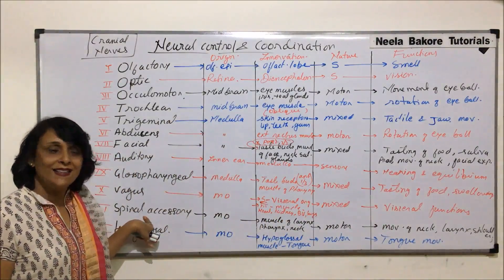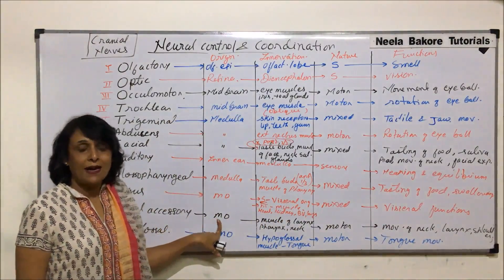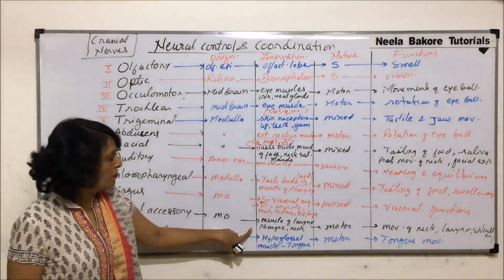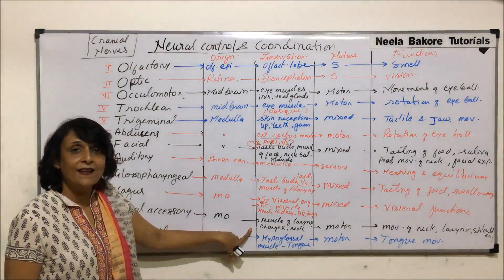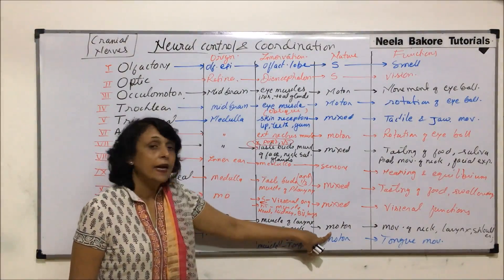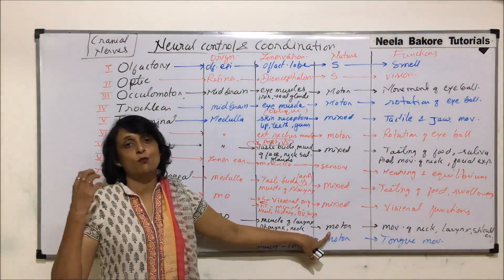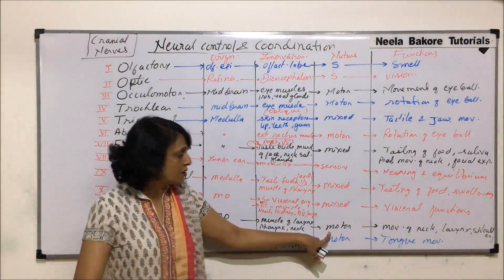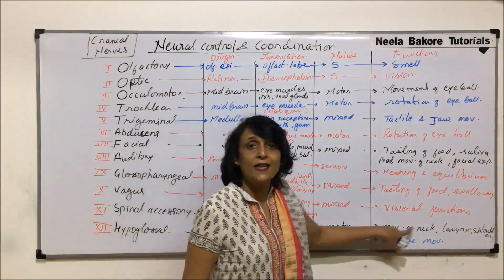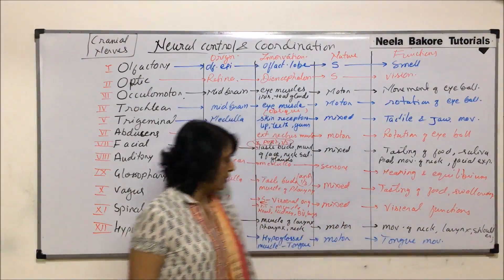The eleventh cranial nerve is spinal accessory, arising from the medulla. It goes to the muscles of the larynx, pharynx, neck, and shoulder. It is a motor nerve, and its function is movement of the neck, larynx, pharynx, and shoulders.